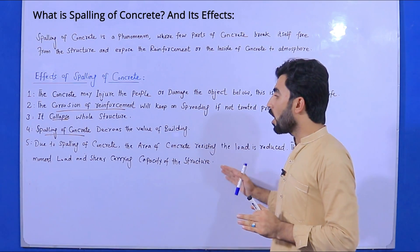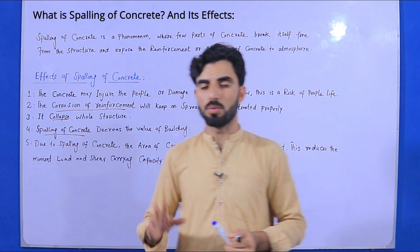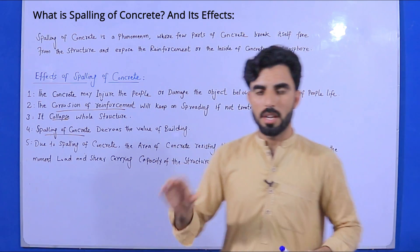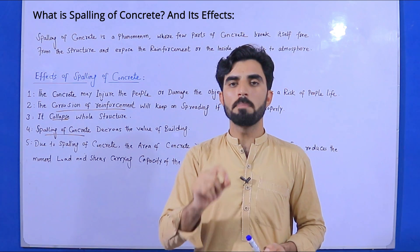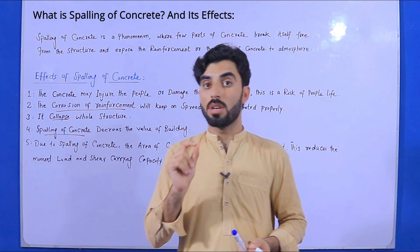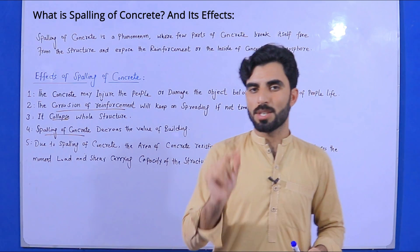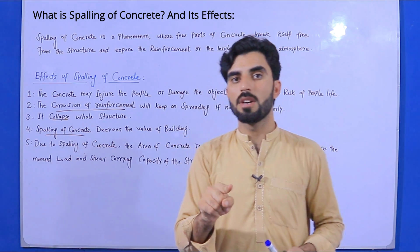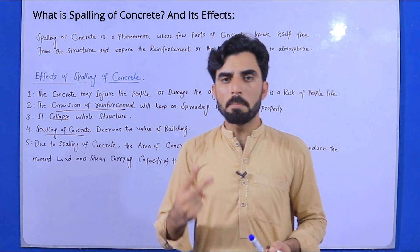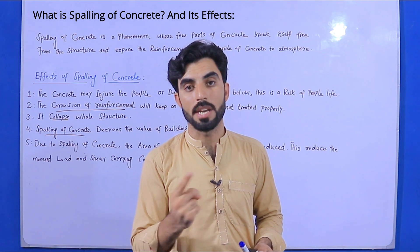Now, what are the causes of spalling of concrete? The first cause is improper water content. If you use too little or too much water in the concrete mix, this is a cause of spalling of concrete. The second cause is improper compaction of concrete in RCC slabs, beams, or columns.